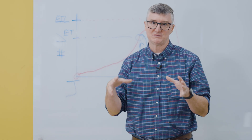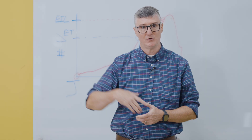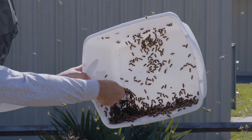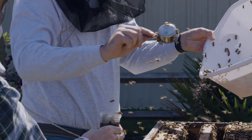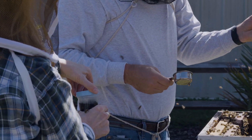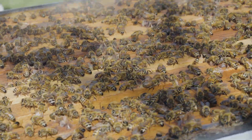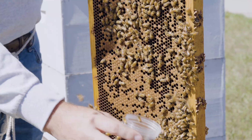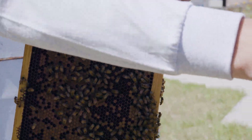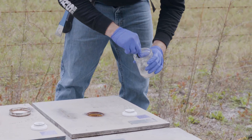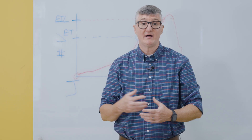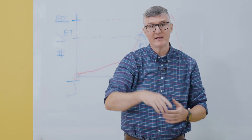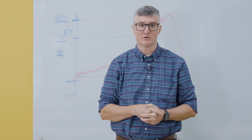So how do we know when Varroa populations reach the economic threshold? Being able to identify your pest and being able to sample for it is essential. It does no good to know the Varroa economic threshold is three mites per 100 bees if you can't recognize when you've reached that level in your colonies. The good news is there are a number of sampling strategies we can use to estimate that Varroa population — things like alcohol washes, powdered sugar shakes, and other methods. Integrated pest management relies heavily on your ability to keep pest populations below the economic threshold using non-chemical control approaches.